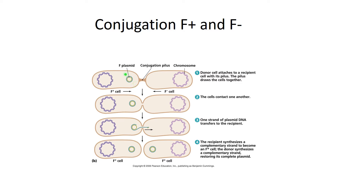On that fertility plasmid is the gene to make a pilus and other genes as well. So an F-plus cell has its main chromosome along with the F, or fertility plasmid, and on that fertility plasmid is the gene to make a sex pilus and other genes — genes for things like antibiotic resistance or how to make a capsule.